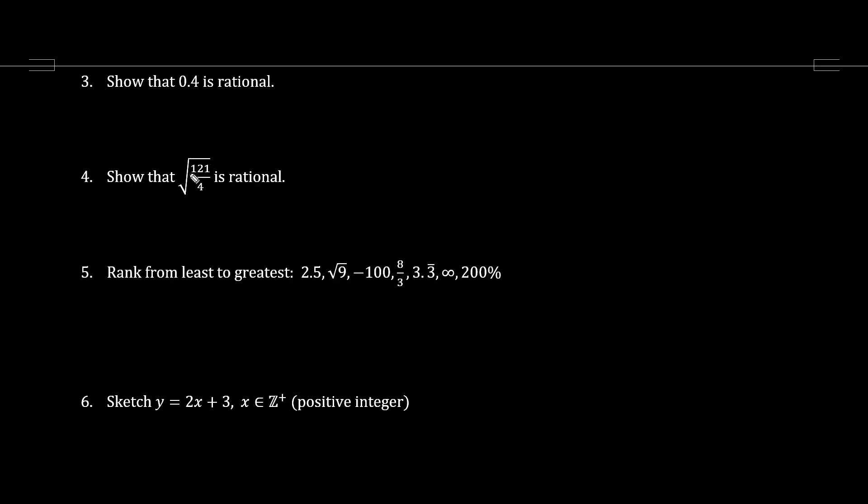Now let's show that the square root of 121 over 4 is rational. Here we have the square root of the top over the square root of the bottom, which is 11 over 2. We have integer over integer. This by definition is a rational number.